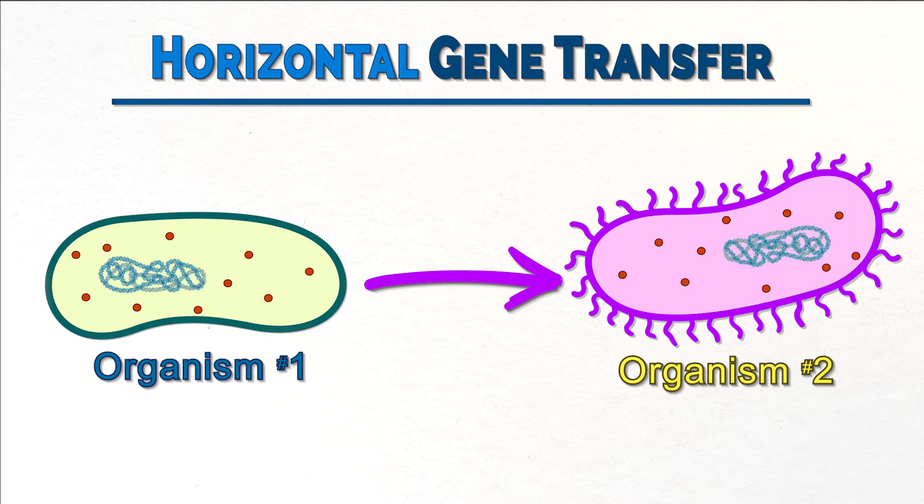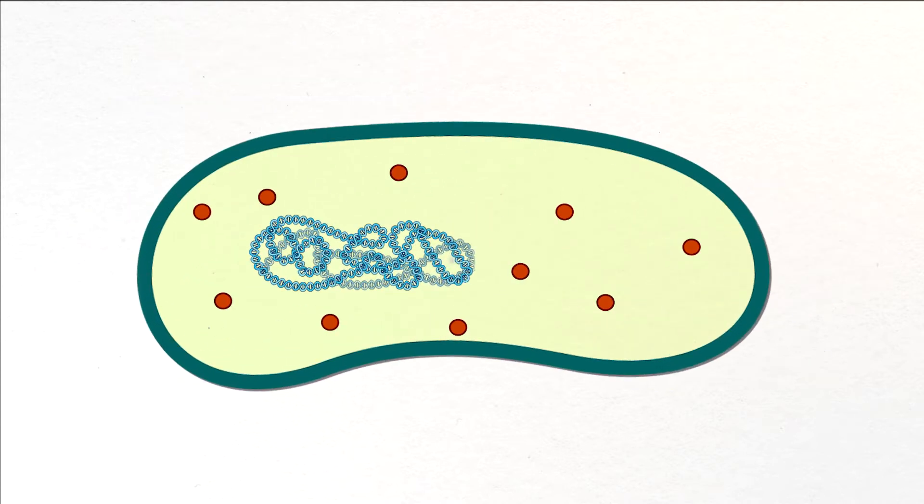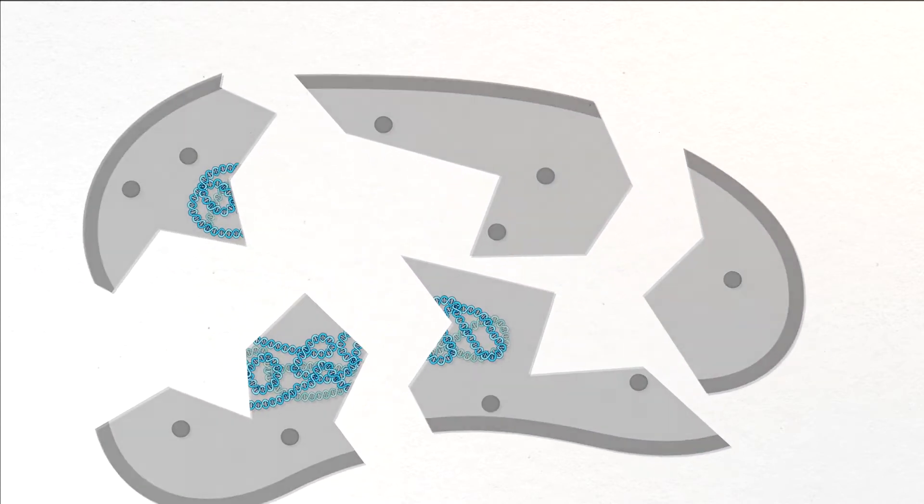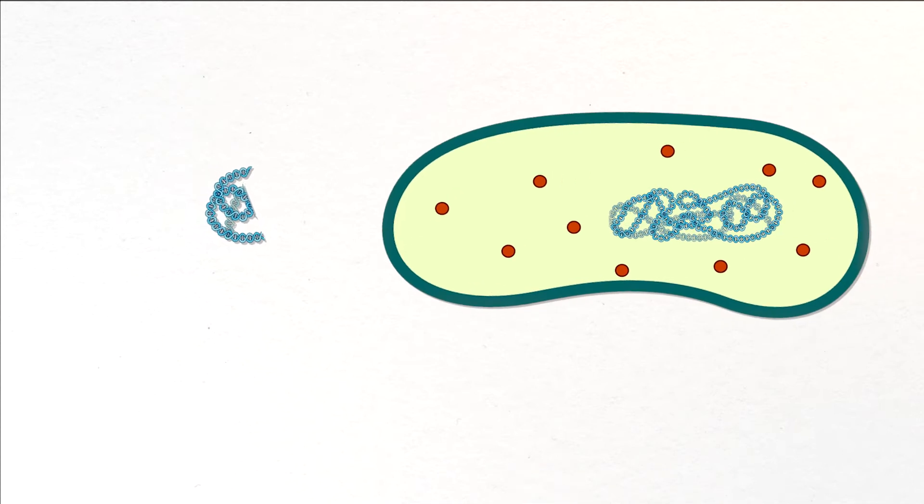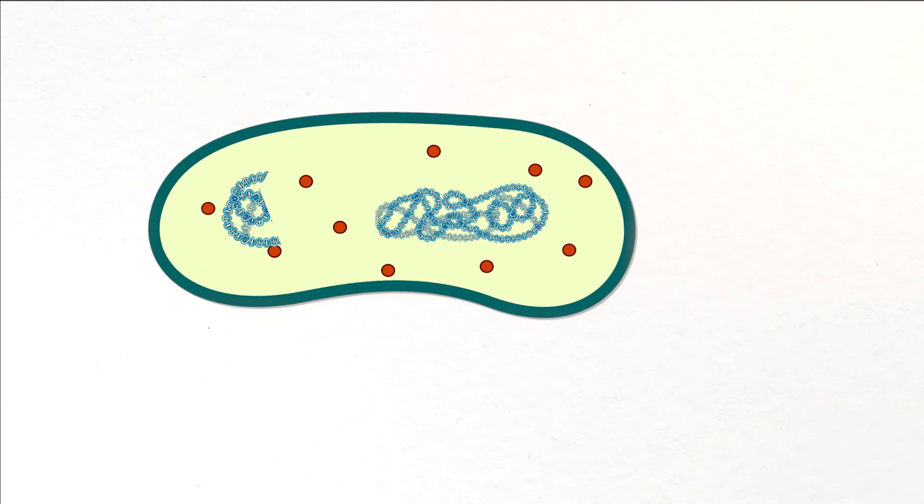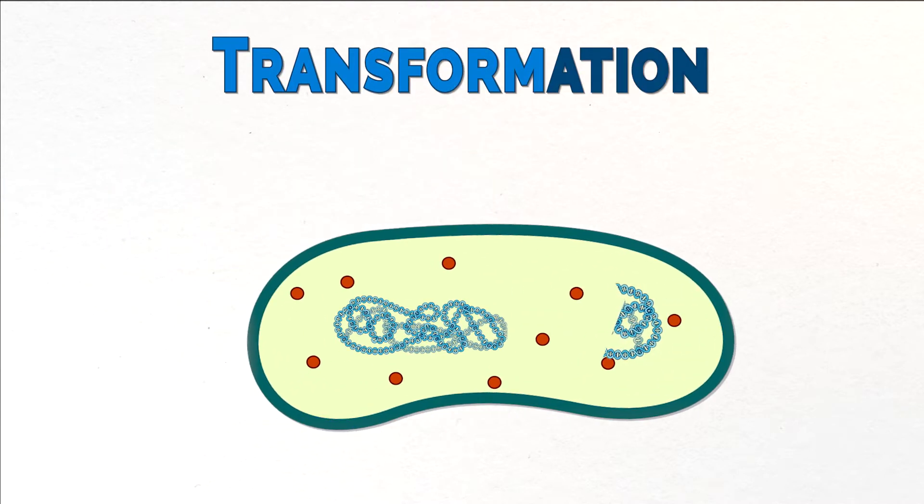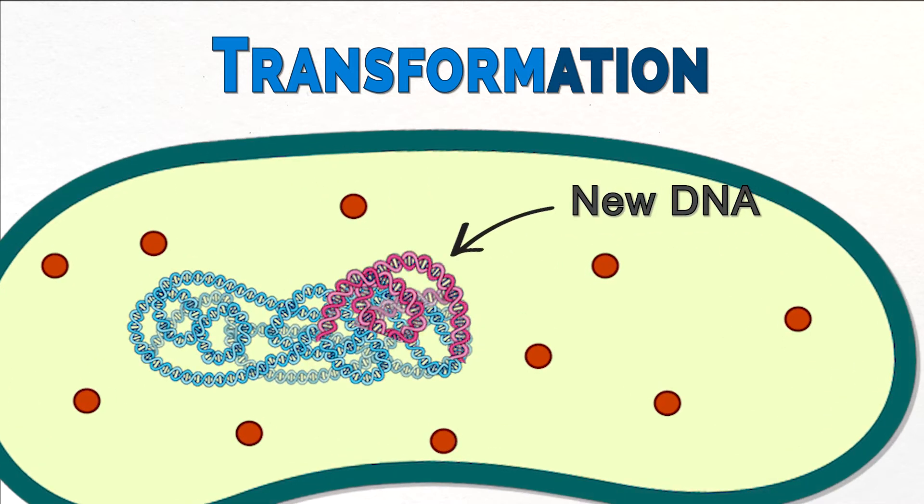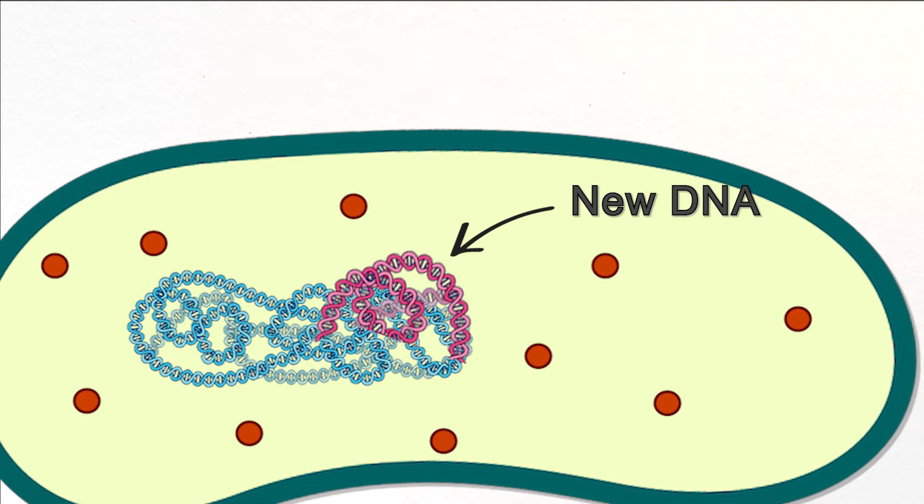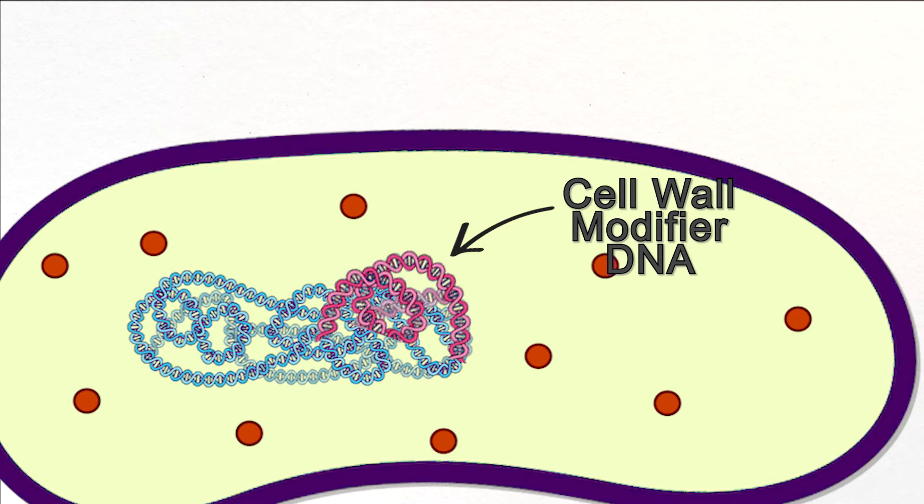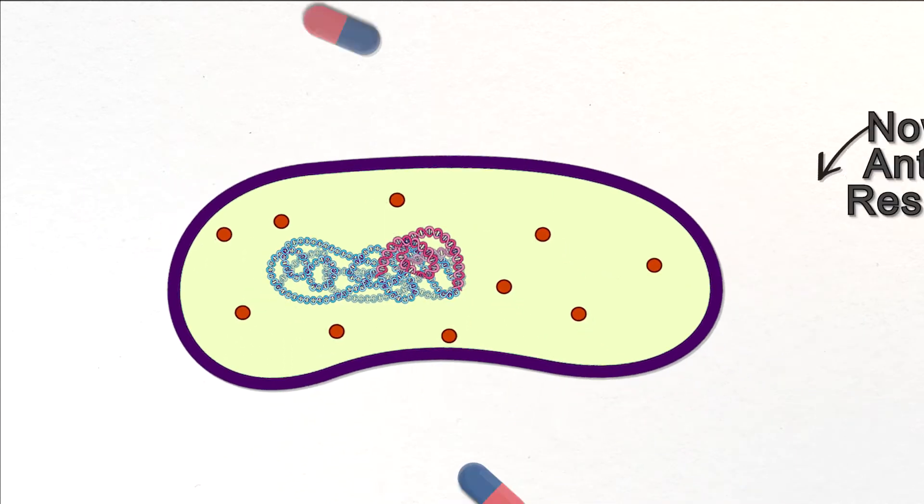There are a few ways this can happen. A bacterium dies and leaves behind some of its DNA. Some bacteria have an ability called competence to actually absorb this DNA into their own DNA in a process called transformation, because they are literally transforming into a different organism genetically. If the new DNA codes for some new capability, the bacterium gains the new capability.